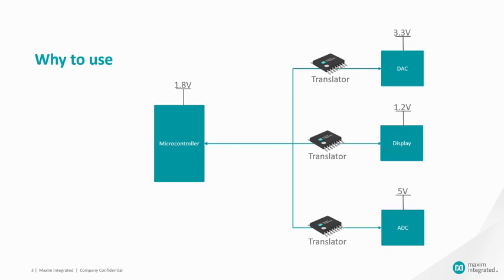Level translators are used to interface two ICs that belong to different logic families, i.e., ICs operating at different voltages. For example, let us take a case where a microcontroller MAX32630 operating at 1.8V has to be interfaced with a DAC MAX250 whose operating voltage is 3.3V. These two ICs are not compatible to communicate with each other due to different threshold levels for logic 1s and logic 0s. Hence, it is required to use a level translator to interface them. A level translator generates compatible threshold levels for devices that are connected to it.